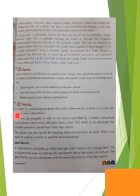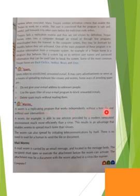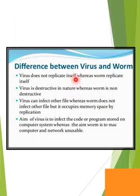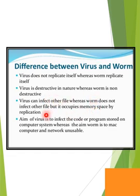Next topic is worm. What is a worm? A worm is a replicated program that works independently without a host file. A virus attaches itself to a file, whereas a worm works independently without a file. What is the difference between virus and worm? Virus does not replicate itself, whereas a worm replicates itself. Virus is destructive in nature, whereas a worm is non-destructive. A virus can infect other files, whereas a worm does not infect other files — it affects your memory space.